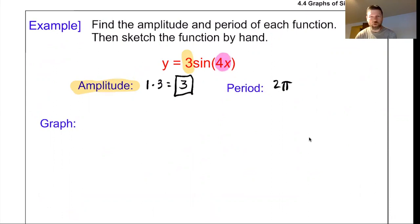For the period, period of sine is normally 2π. But with this function, I've got 4 times x on the inside. We might remember that that is a horizontal shrink. It shrinks it by a factor of 4 or 1 fourth. So the period is going to be 2π times the reciprocal of whatever number that is. So in this case, 2π times 1 fourth. 2π times 1 fourth is π over 2.